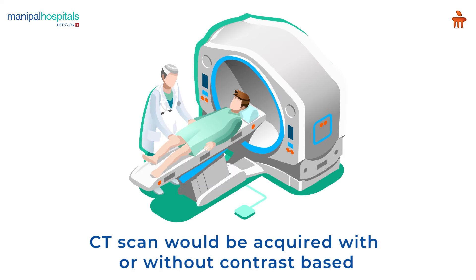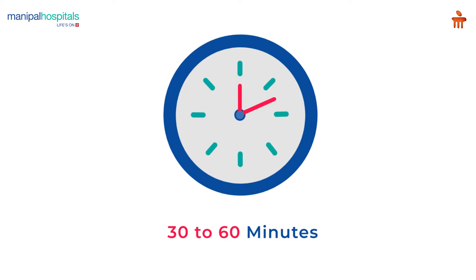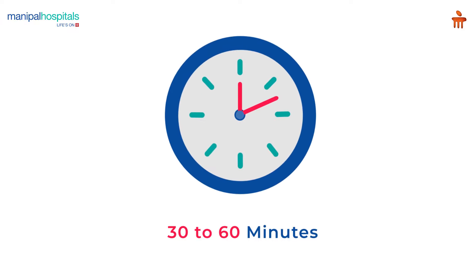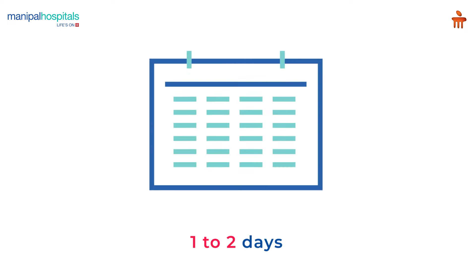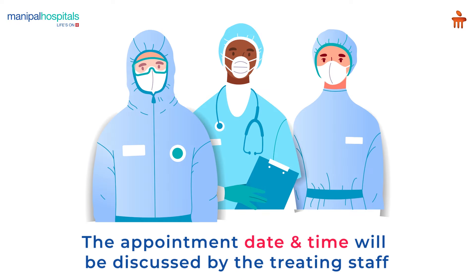After positioning, a CT scan would be acquired with or without contrast based on the clinical site and indication. The entire CT scan procedure takes around 30-60 minutes. After the scan, the treating doctor will mark out the areas which need to be treated and calculate the doses. Calculation of the doses and approving the treatment plan generally takes 1-2 days.